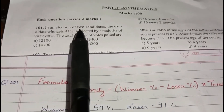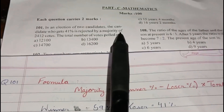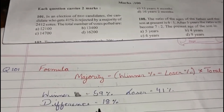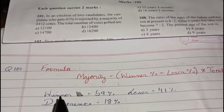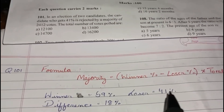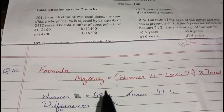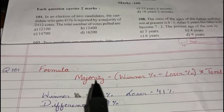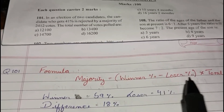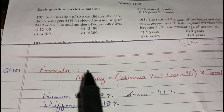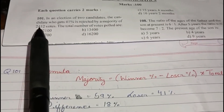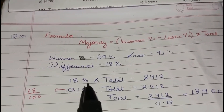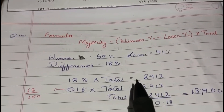In this question there are two candidates, so their vote share will be equal to 100%. If one candidate gets 41%, the other candidate must get 59%. The winner has 59% and the loser has 41%, and the difference is 18%. To get the total number of votes polled, we use the formula: majority equals winner percentage minus loser percentage, multiplied by total. The majority given is 2412.